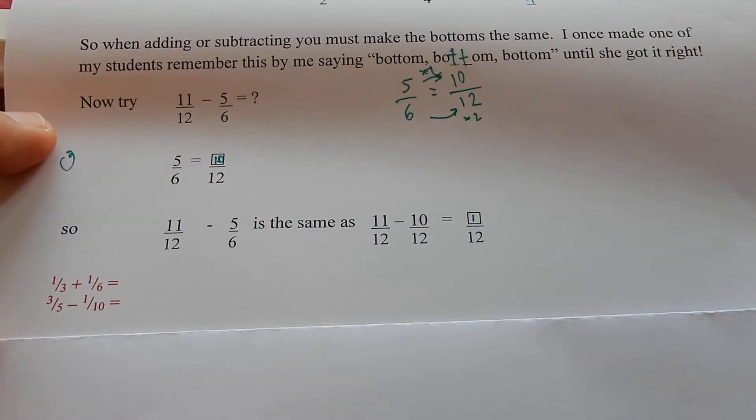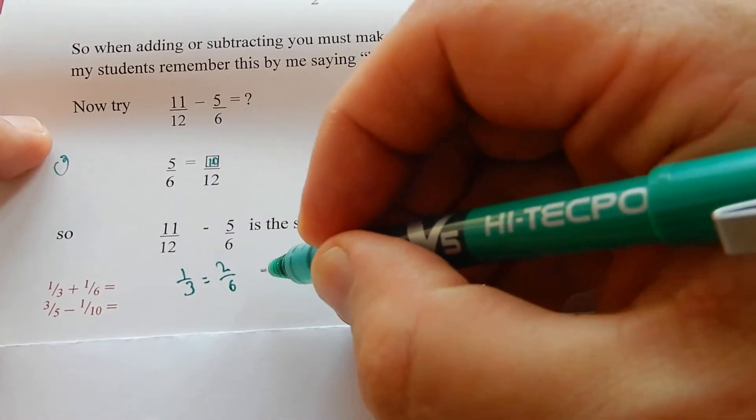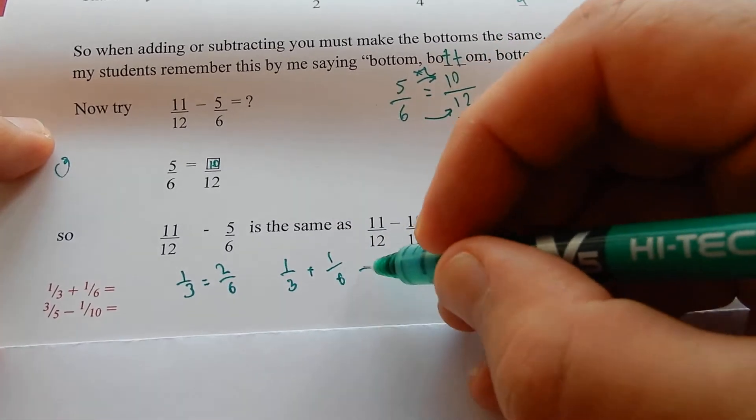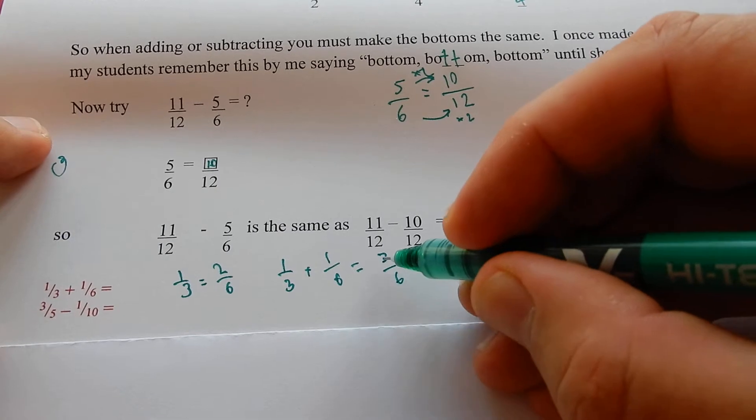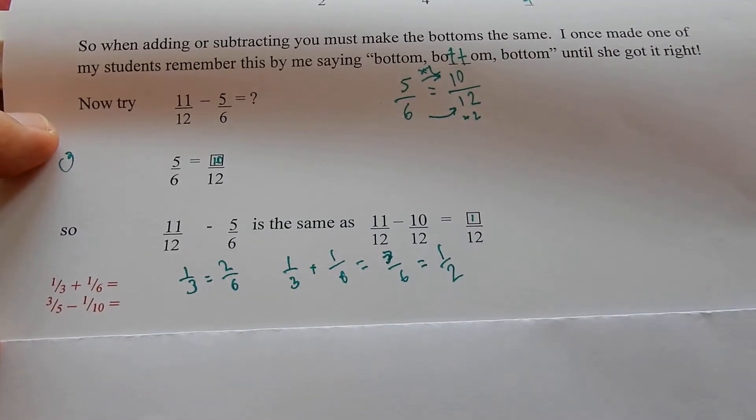One third plus one sixth. Well one third equals two sixths. So one third plus one sixth equals two sixths plus one sixth, three sixths. And three sixths is equal to a half. Do it on your calculator, it's equal to a half.